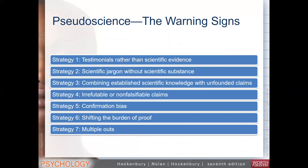Finally, one of my favorites, is the multiple outs. If the product does fail, companies have already figured out ways to explain why it failed. So if you wore the bracelet for a year and it didn't do anything, they might say you didn't wear it long enough, maybe you need five years; or magnets act differently on different body parts, maybe you need two of them; maybe you put it in the wrong spot, or the magnets were the wrong type, shape, size, or color. These are strategies you can use to identify pseudoscience versus real science.